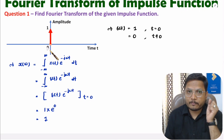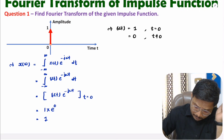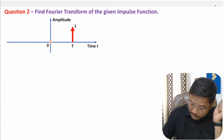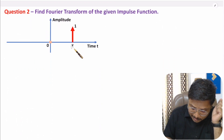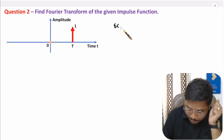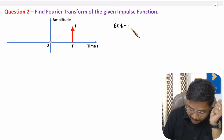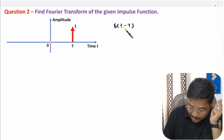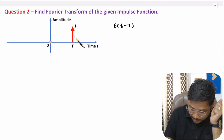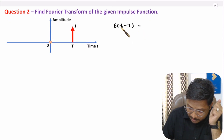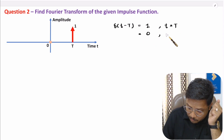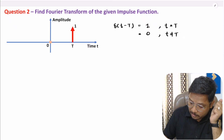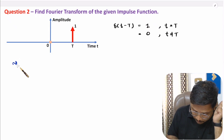Now let me solve the second question to further resolve your understanding. Here we have an impulse at t equals capital T, meaning the signal is delta of t minus capital T. This means the impulse has value one at t equals capital T, and it has value zero for t not equal to capital T.